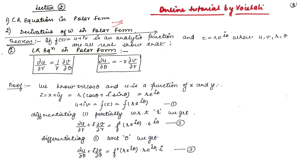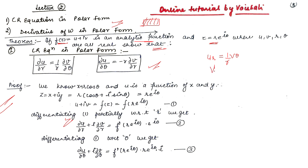Now we do the CR equations in polar form. The theorem states: if F(Z) = U + IV is an analytic function — meaning differentiable in a given domain — and Z = R·e^(iθ) where U, V, R, θ are all real, then we must show that ∂U/∂R = (1/R)·∂V/∂θ and ∂U/∂θ = −R·∂V/∂R. In short notation: U_R = (1/R)·V_θ and V_R = −(1/R)·U_θ.